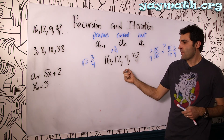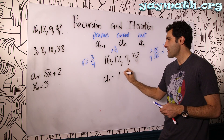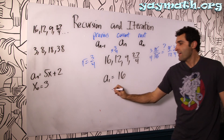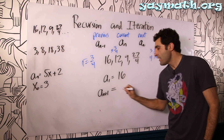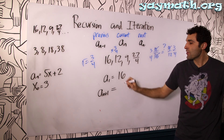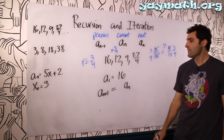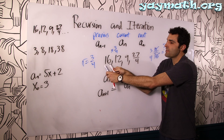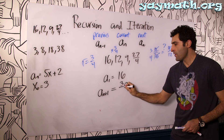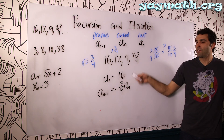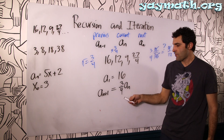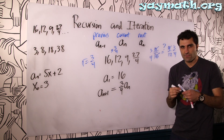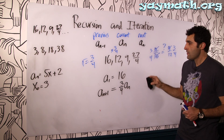Similar to what we did last time, we define the formula: a1 = 16, and then the next term a(n+1) equals the current term times 3/4. That's it — this is a recursive formula. Whatever the next one is, is 3/4 times the current, and on and on.